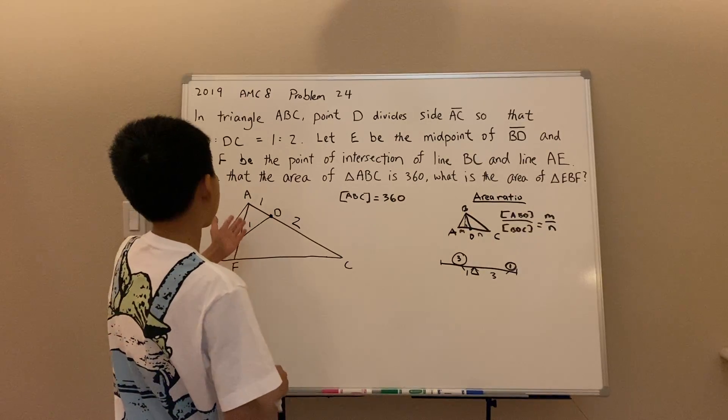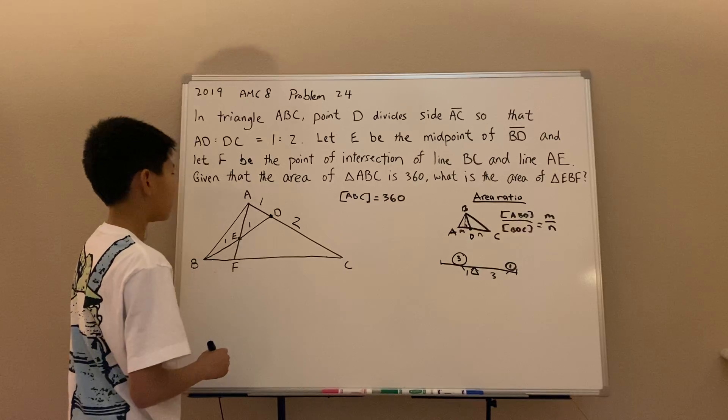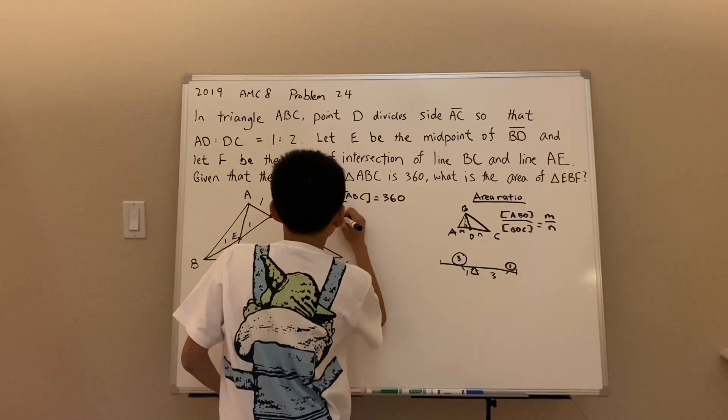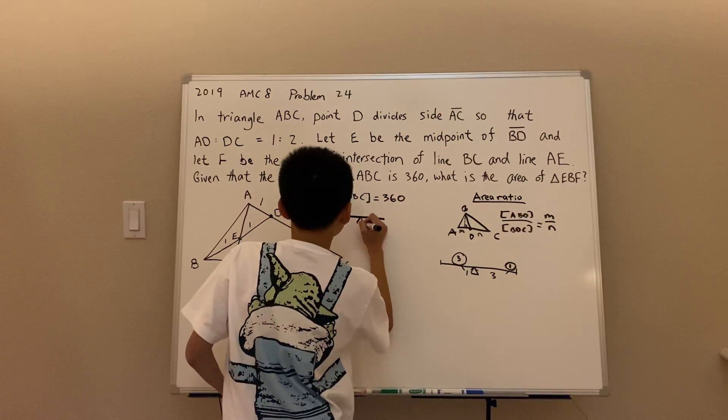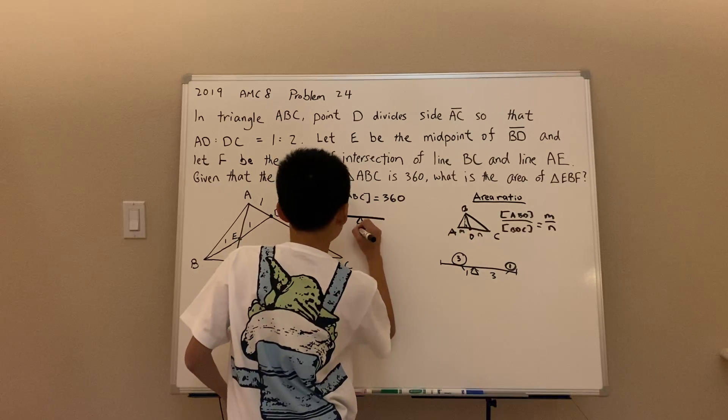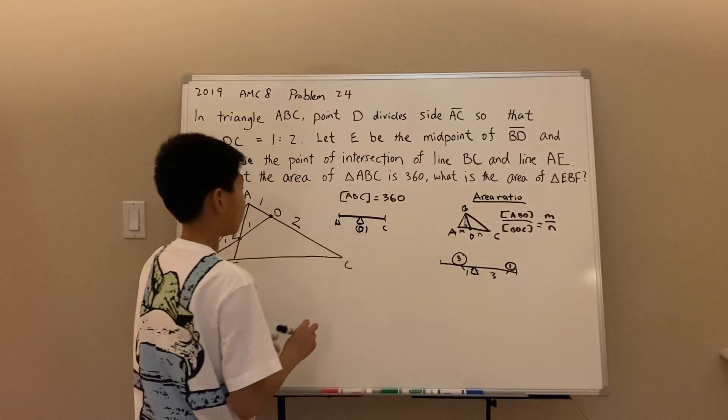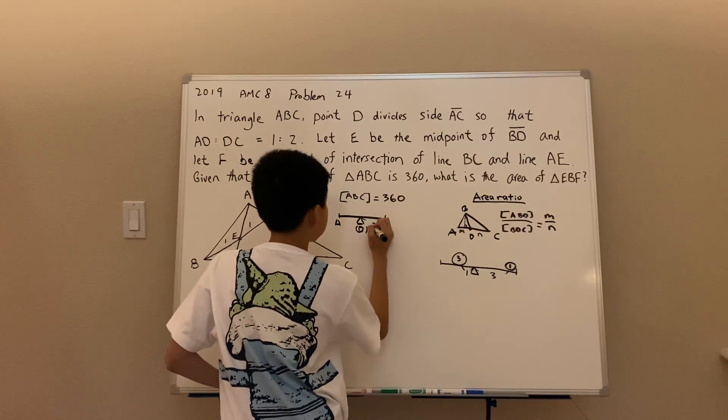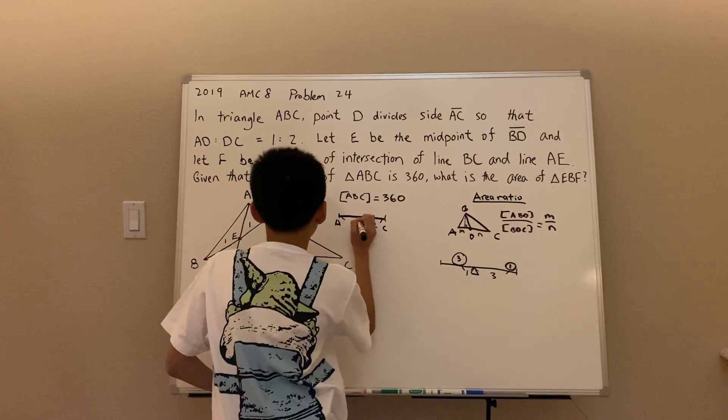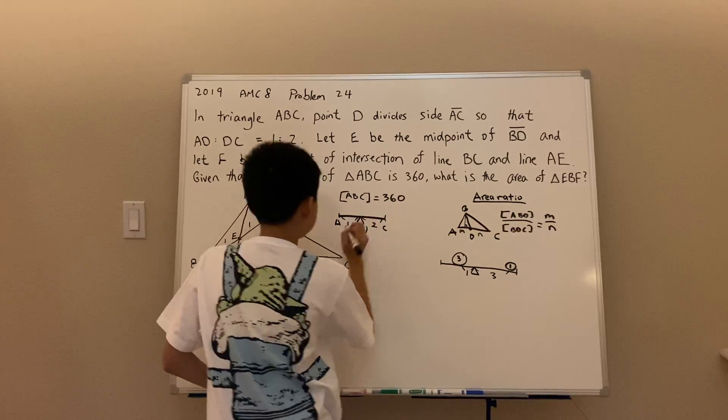Let's look at seesaw ADC. Let's draw it out. ADC. Now if this is the fulcrum, this is D. And this is A, and this is C. Well, okay, this is not to scale, but let's just assume DC is two, and AD is one. Well,